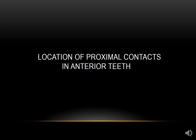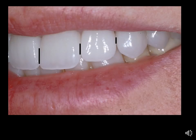The location of the contact areas varies from tooth to tooth. Between the centrals, it's located in one area. Between the central and lateral, it's a little bit higher. And between the lateral and the canine, it's higher yet. This gives a subtle smiley effect. If we get these reversed, the teeth actually look like a frowny face.